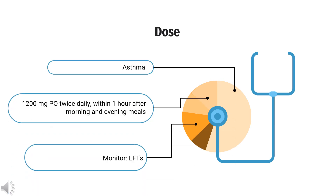How to use Zileuton for asthma: Extended release — 1,200 mg PO twice daily, within 1 hour after morning and evening meals. Conventional — 600 mg PO 4 times daily. Monitor LFTs; contraindicated in hepatic dysfunction.